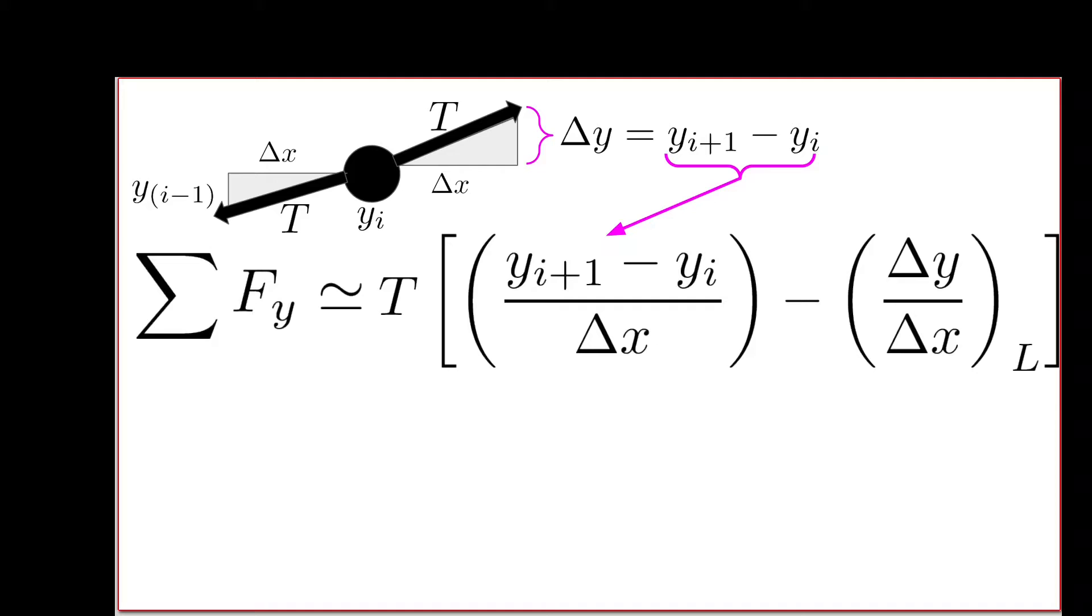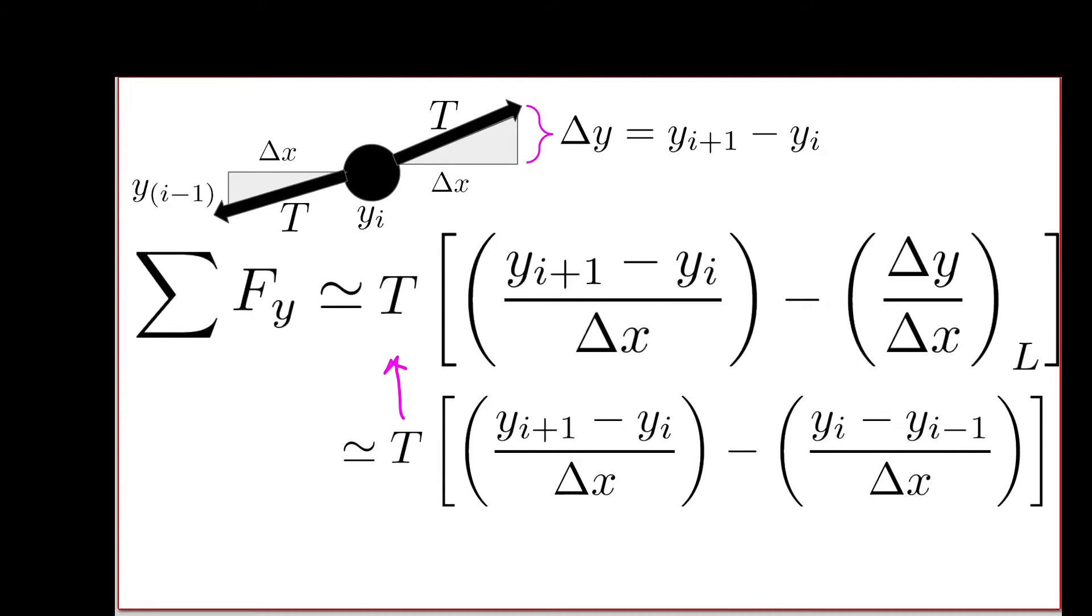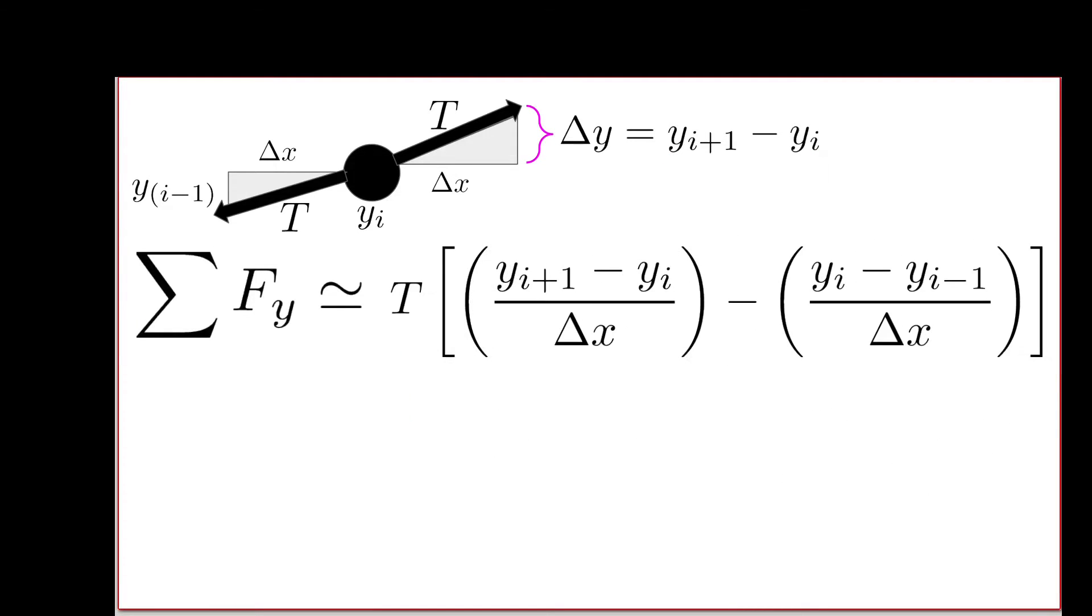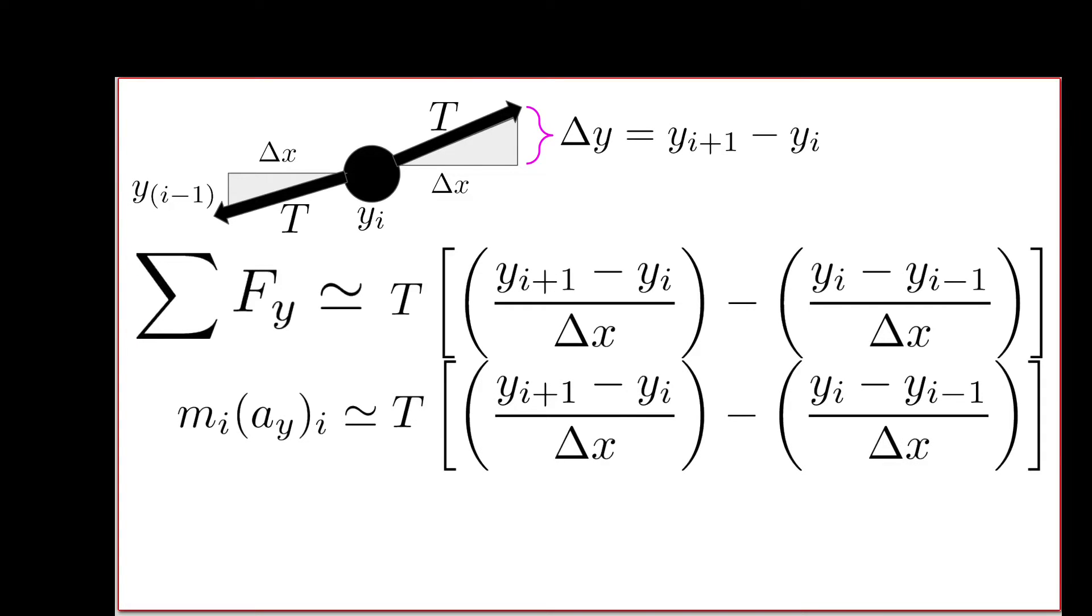Similarly, on the left-hand side, we're going to take the difference between the height of y sub i and the height of y sub i-1. We know that the sum of forces in the y direction, the net force in the y direction, is equal to the mass of this middle particle times its acceleration. We can notate that as m sub i, the mass of the i-th particle, times a_y sub i, the acceleration of the i-th particle.